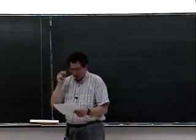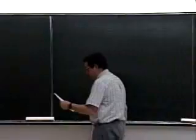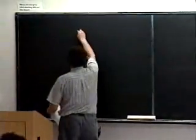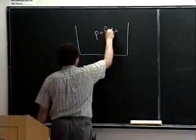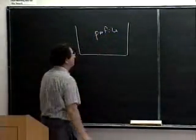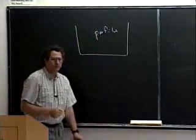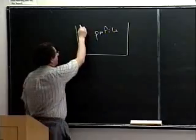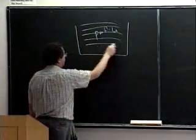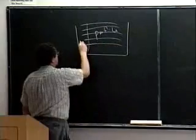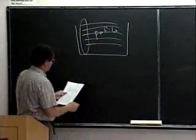I want to take a little bit more formal approach than I did last time. So suppose we have a profile here. A profile is a multiple alignment of sequences, and we have then the frequencies of the different residues in each position.